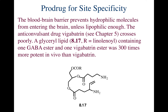Other prodrugs for site-specificity: we know that the blood-brain barrier prevents hydrophilic molecules from entering the brain unless they are lipophilic enough. Looking at the log P value, it needs to be between 2 and less than 5 — if it's more than 5, it's too lipophilic and it won't cross. The anticonvulsant drug Vigabatrin crosses the blood-brain barrier poorly.